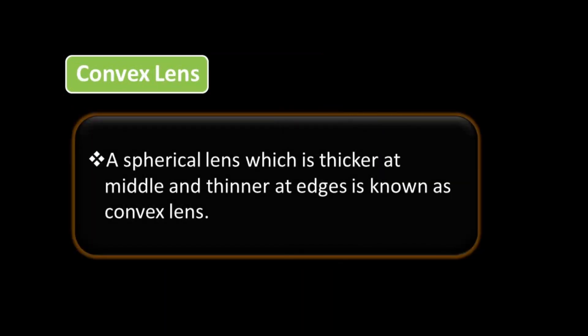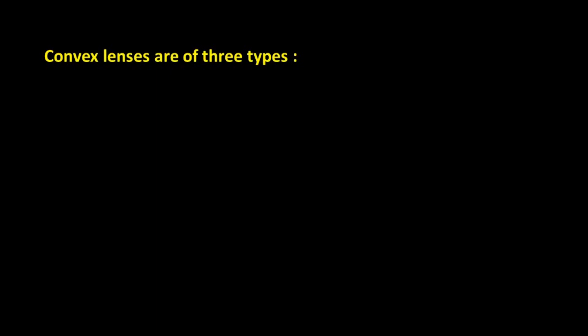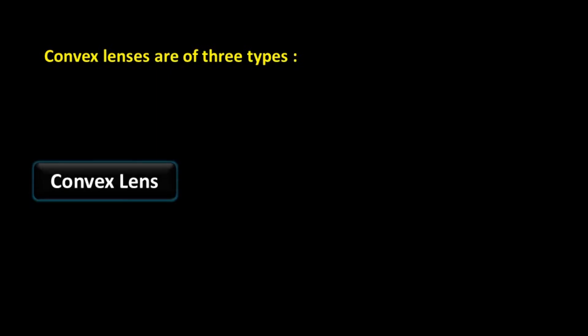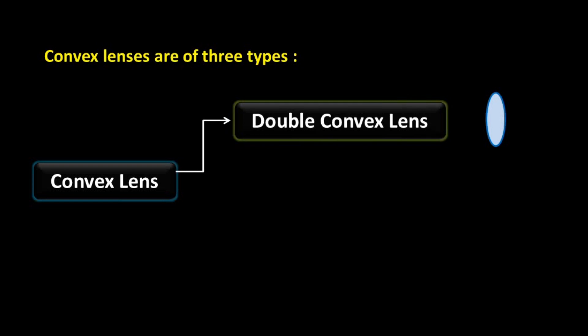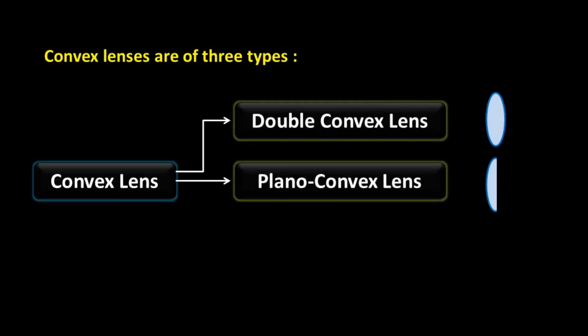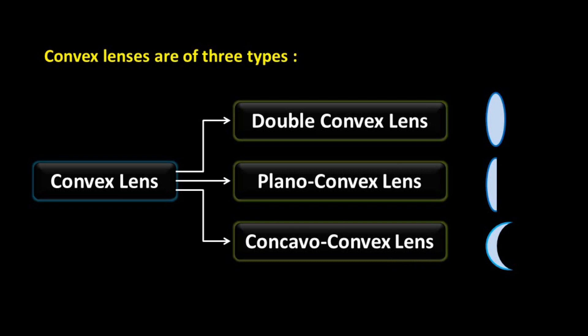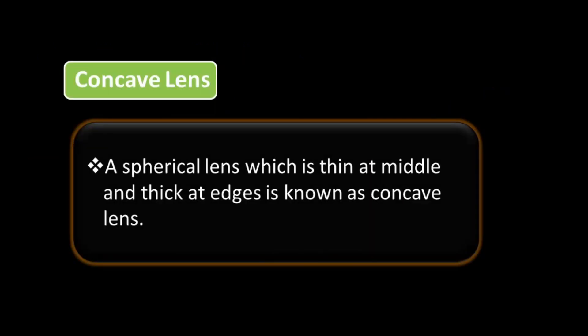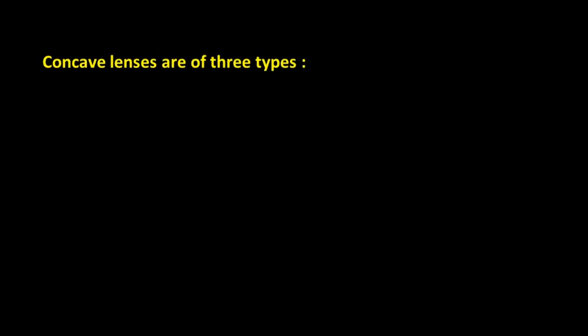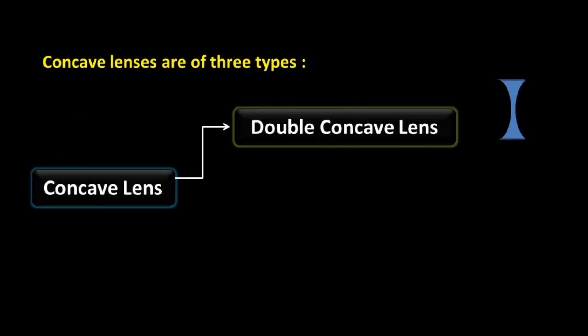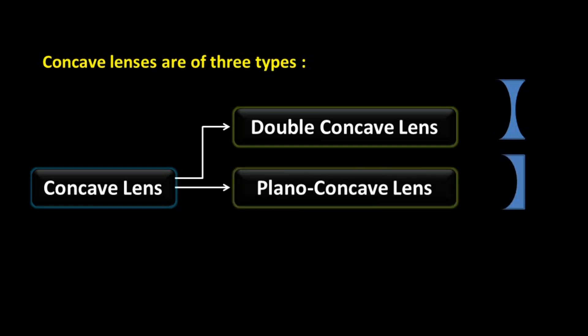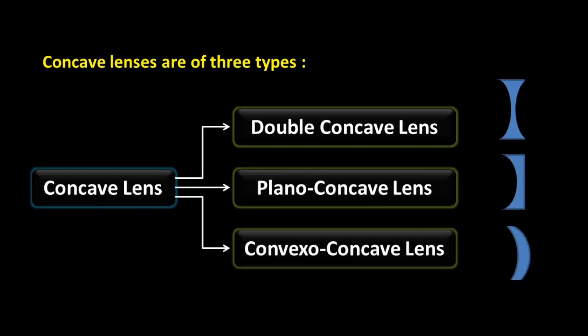A spherical lens which is thicker at the middle and thinner at the edges is known as a convex lens. Convex lenses are of three types: double convex lens, plano-convex lens, and concave-convex lens. A spherical lens which is thin at the middle and thick at the edges is known as a concave lens. Concave lenses are of three types: double concave lens, plano-concave lens, and convex-concave lens.